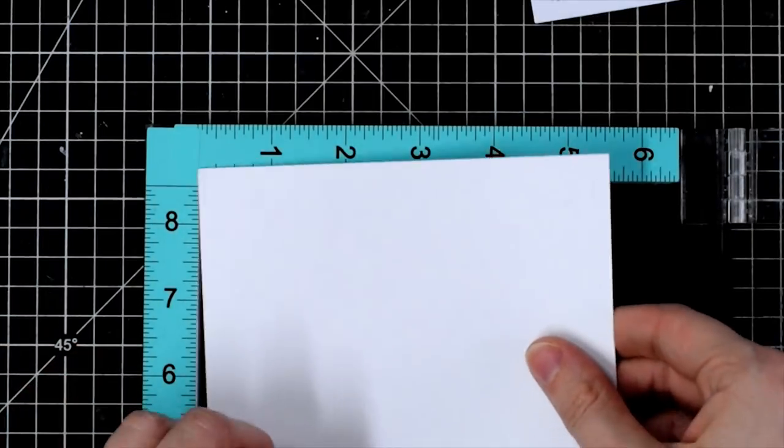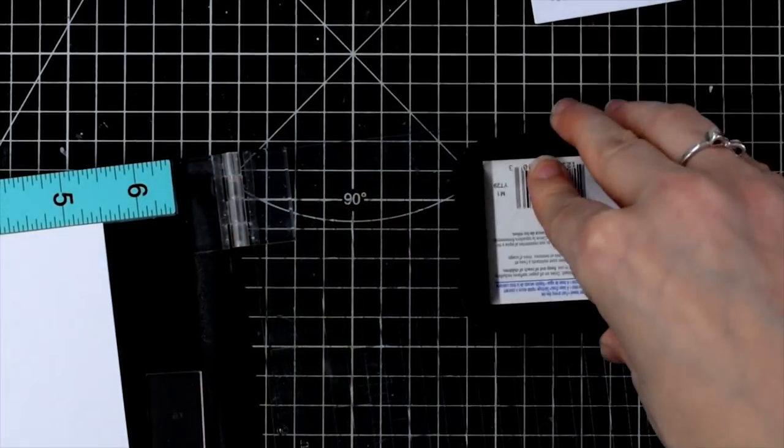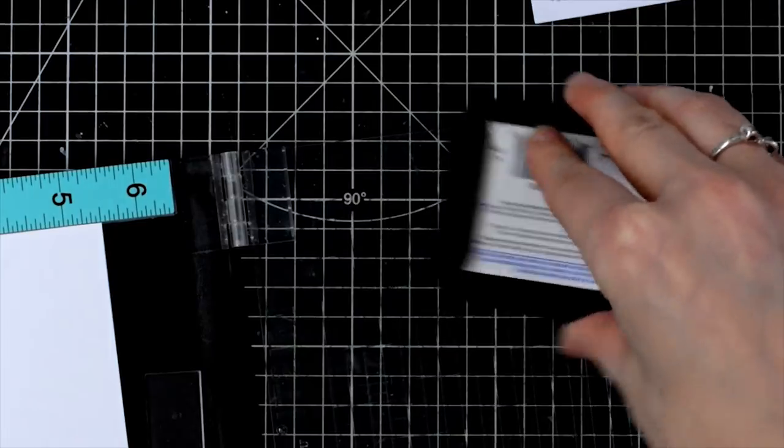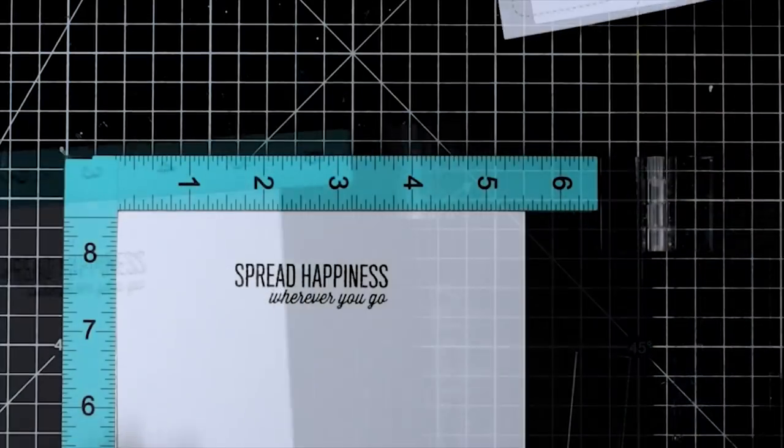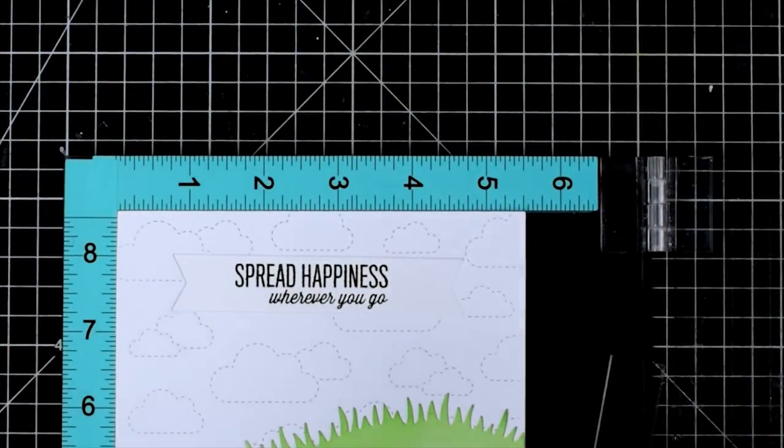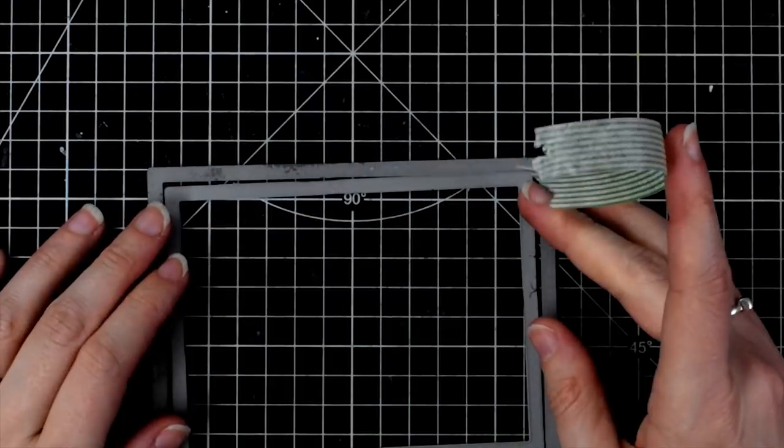And then stamp that right onto the front of my card blank and it will be perfectly positioned. When I lay my cloudy backdrop on top, it's in exactly the right place.